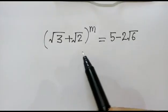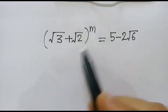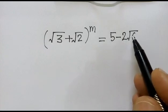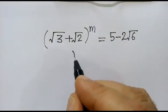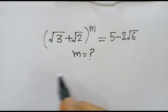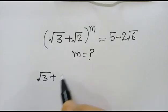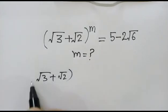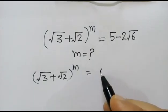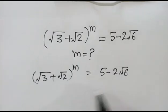Hi friends, we have a given equation: square root of 3 plus square root of 2, whole power m, is equal to 5 minus 2 square root of 6. We have to find out the value of m. Let's start. Square root of 3 plus square root of 2, whole power m, is equal to 5 minus 2 square root of 6.